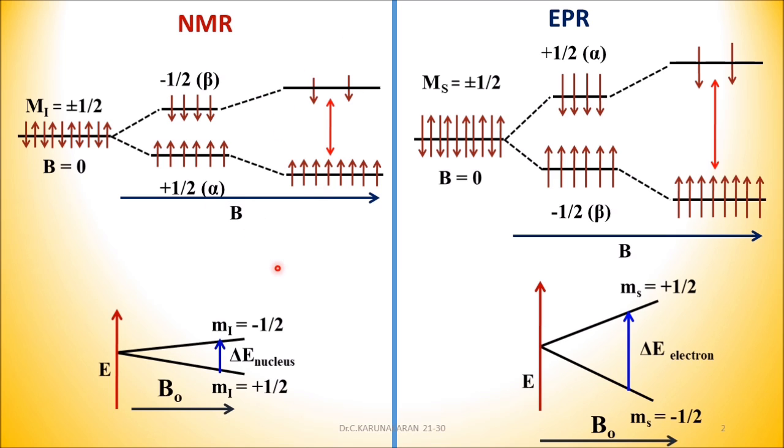The advantage of using higher applied field strength is that the spectrum is more resolved at higher frequency, higher radio frequency, and higher field strength. Whereas, low resolution NMR is obtained at lower radio wave frequency and lower magnetic field strength.